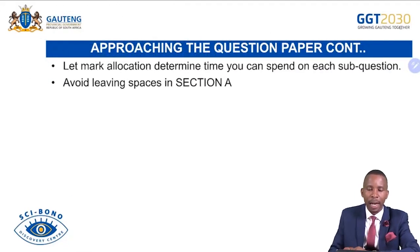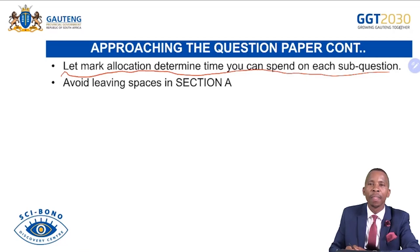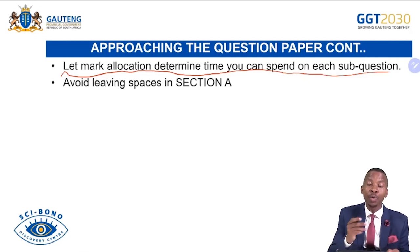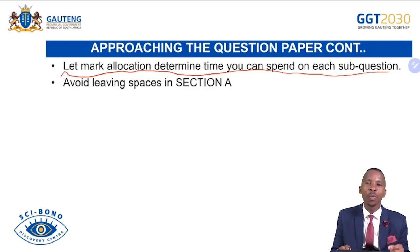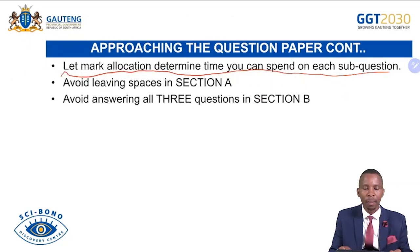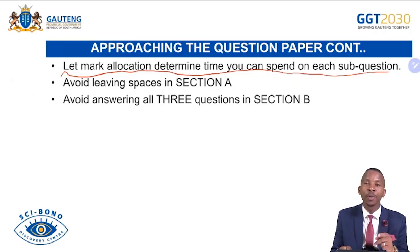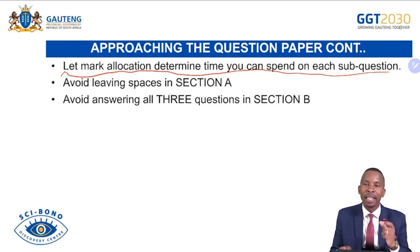Let mark allocation determine the time you spend on each sub-question. You can't spend five minutes on a one-mark question or write a full paragraph for two marks. Look at mark allocation and provide answers based on marks. Avoid leaving spaces in Section A — answer everything. Avoid answering all three questions in Section B; you answer only two out of three — those two where you believe you'll get more marks.